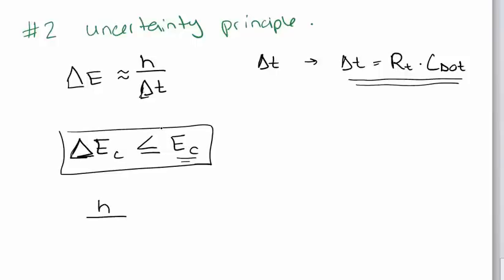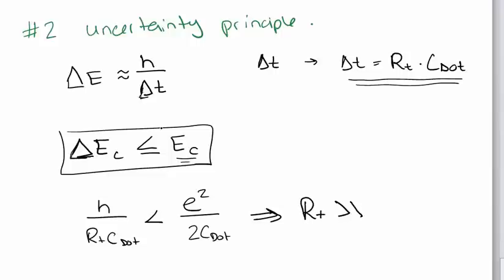This boils down to H over RT C dot must be less than the charge squared over 2 C dot. And if we simplify that a little bit further, it tells us that RT must be much, much greater than H over E squared.